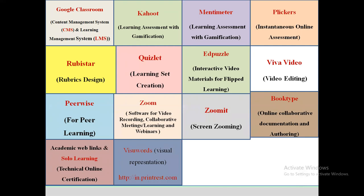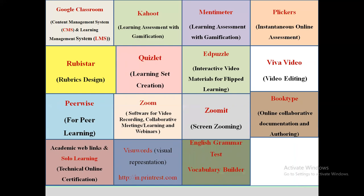Visual Words is another online software useful for learning English through visual representation. Pinterest is another website that helps for learning English in visual representation — a fantastic website having plenty of mind maps for English learning. English Grammar Test and Vocabulary Builder are mobile apps which help for English learning. Hello English is another mobile app useful for learning functional English and English dialogues.